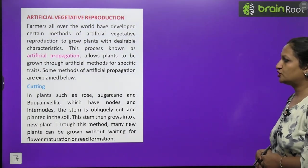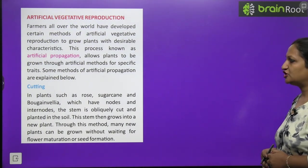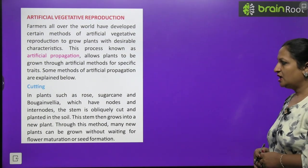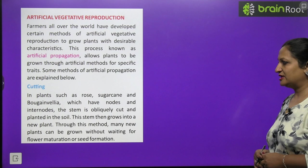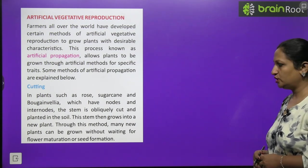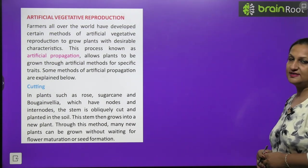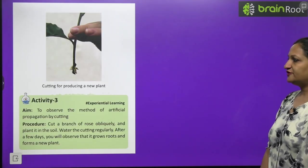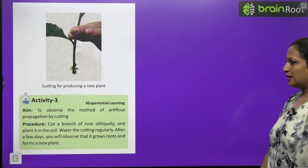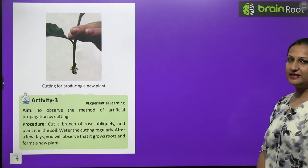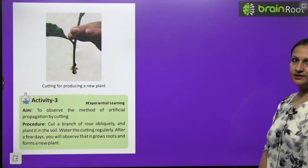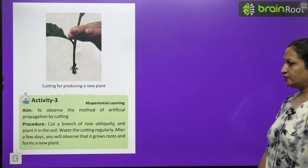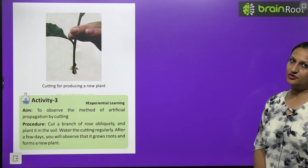Now children, cutting is a method. Stem cutting is a very important method through which we can grow new plants. In this we cut the stem of whichever flower we like, like rose or bougainvillea. We cut it slightly obliquely and plant it in soil, water it, and provide favorable conditions so that new leaves develop from it. So by this method we can grow many new plants without waiting for the flowering to take place. In plants such as rose, sugarcane, bougainvillia which have nodes and internodes, stem is obliquely cut and planted in the soil. This stem then grows into the new plant. Activity 3: to observe the method of artificial propagation by cutting. You will cut a branch of rose obliquely and plant it in the soil. Water the cutting regularly. After a few days you will observe that it grows roots and forms new plant.